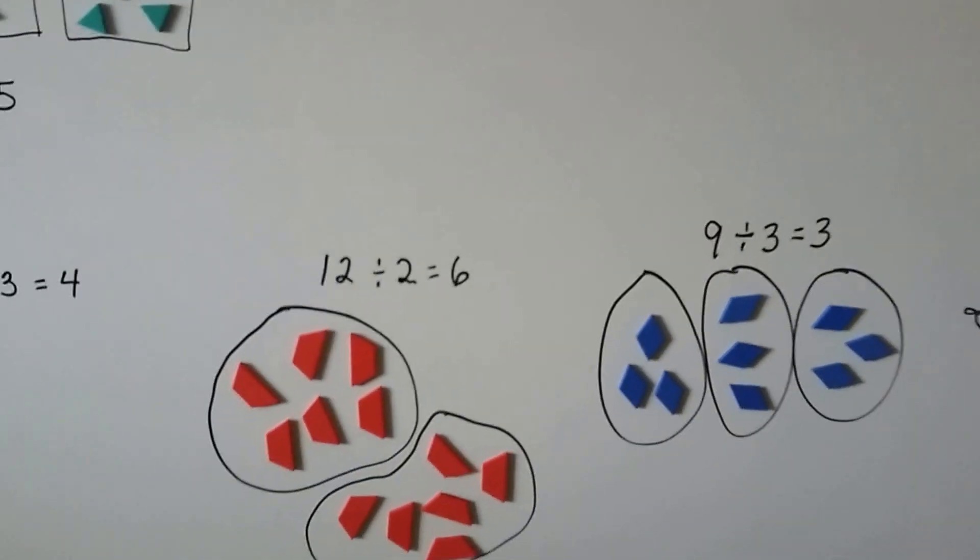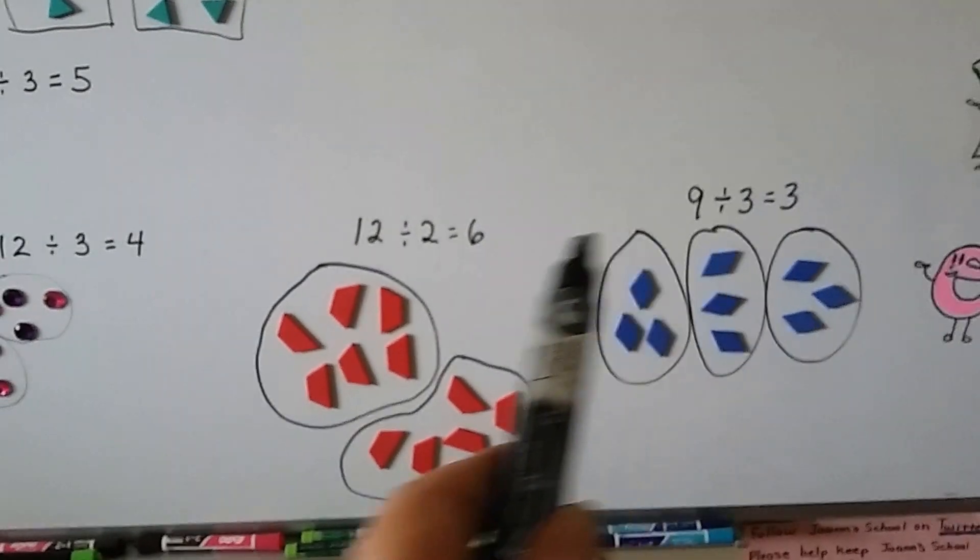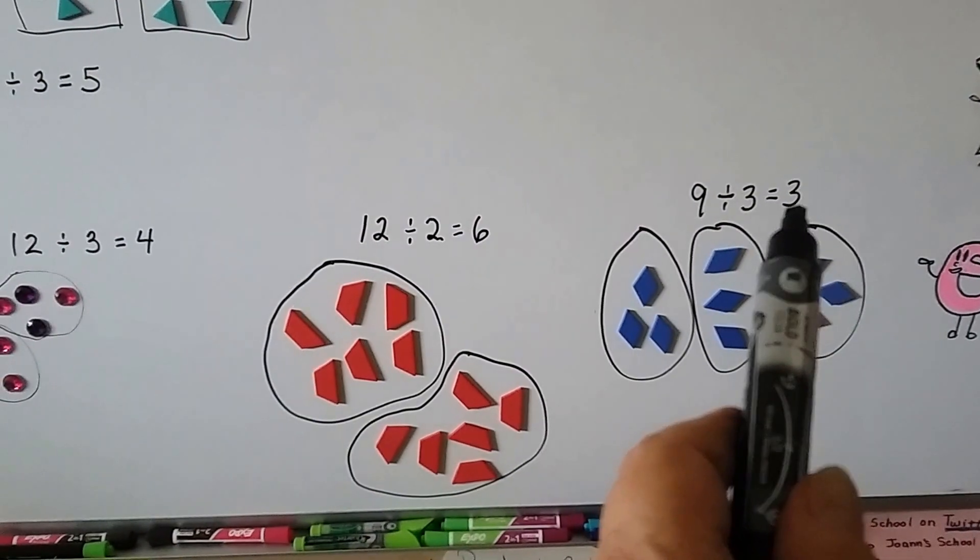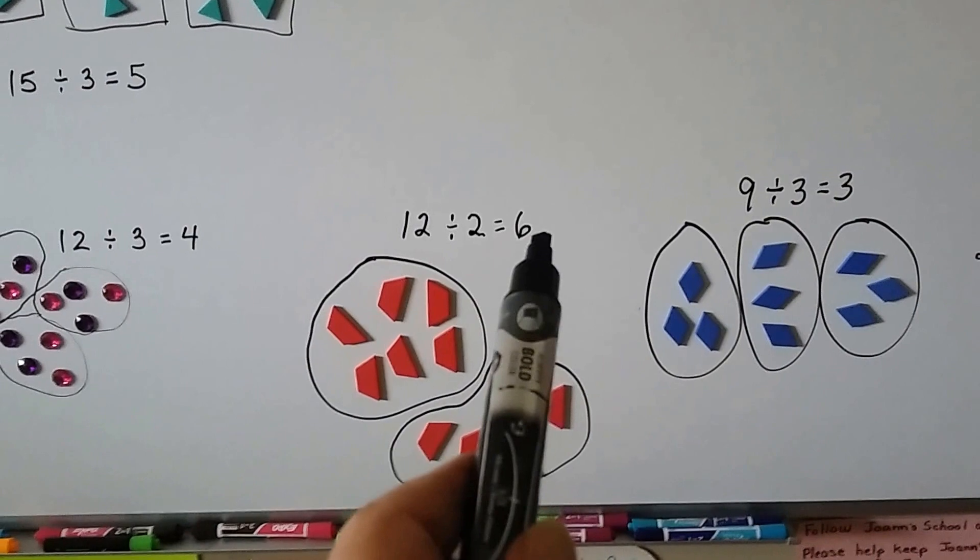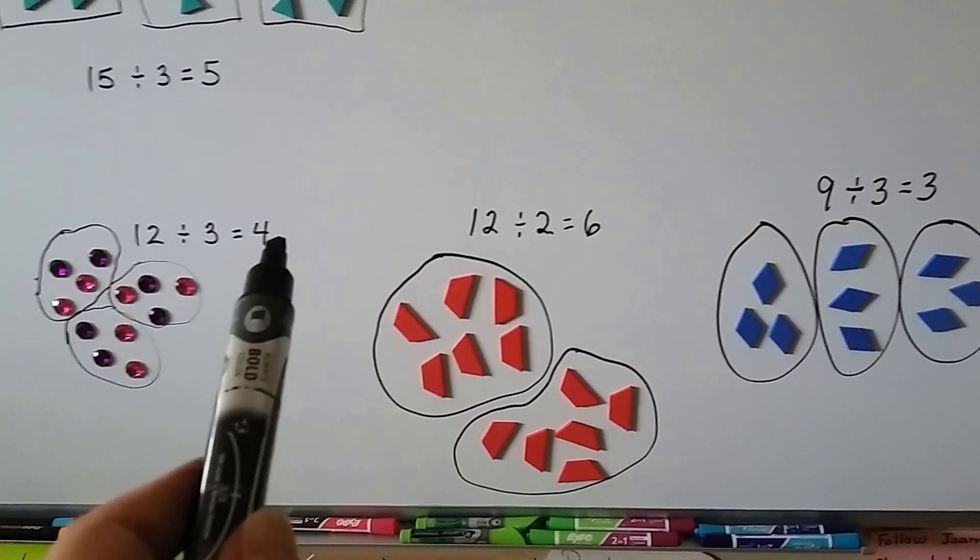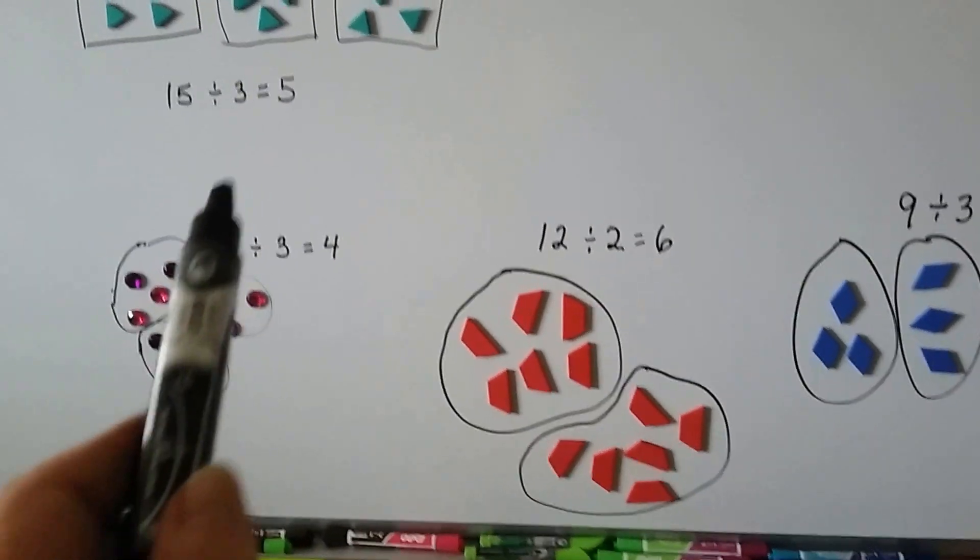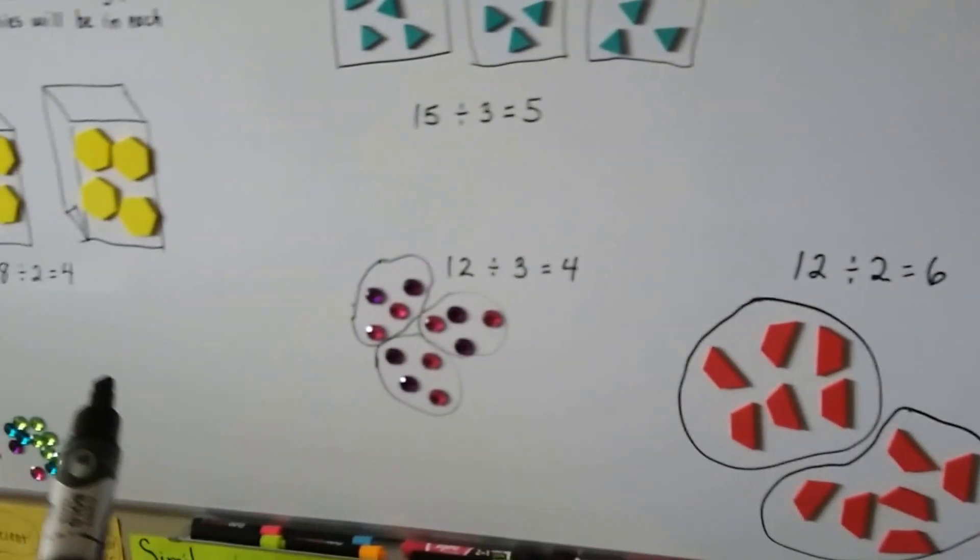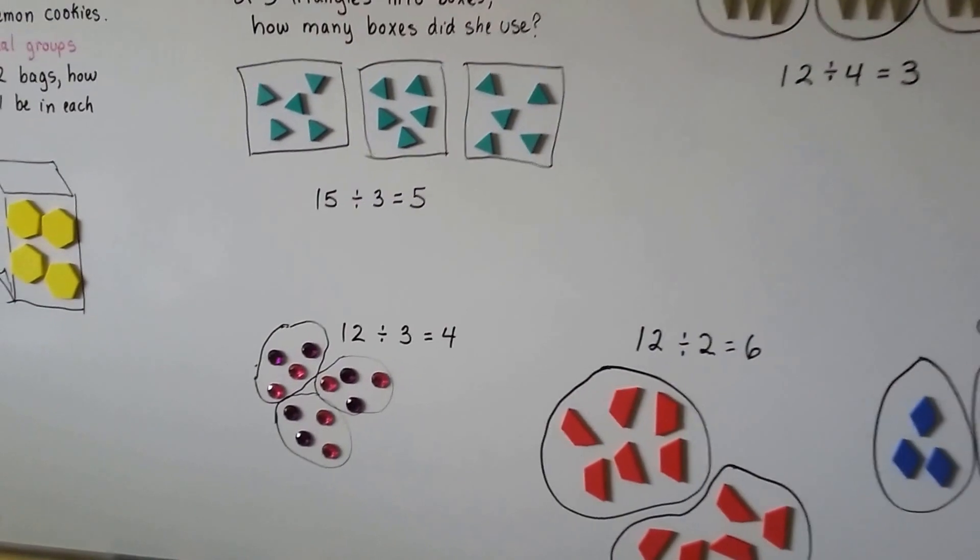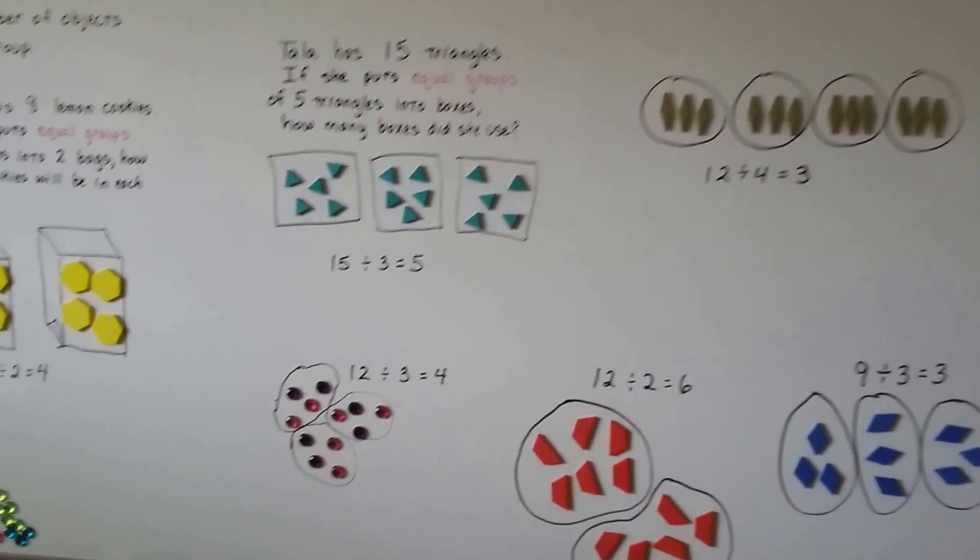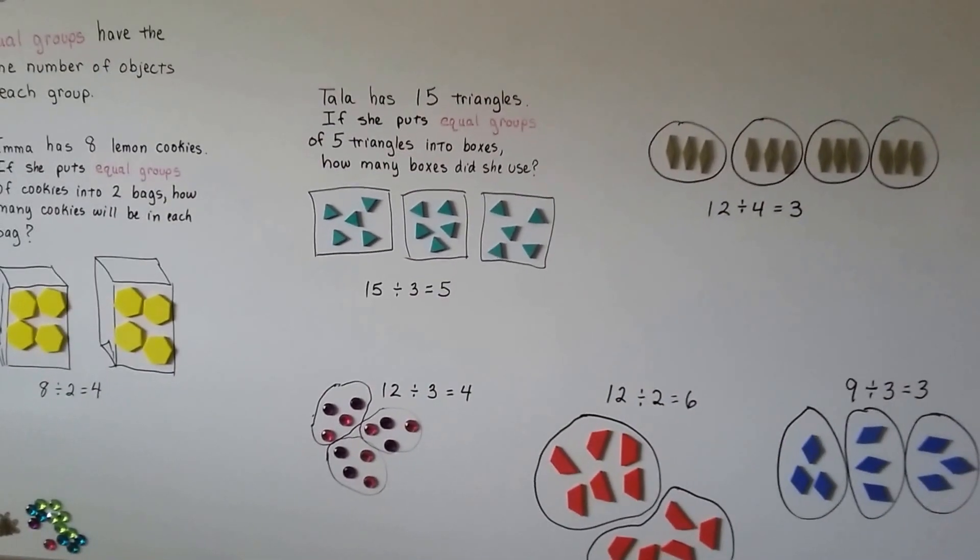Did you notice anything about these? That they're really the multiplication going backwards? Three times three is nine. Six times two is twelve. Three times four is twelve. Five times three is fifteen. Four times two is eight. Division is the opposite of multiplication.